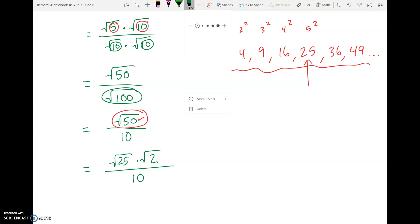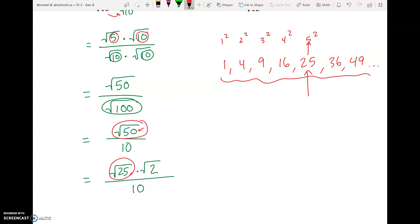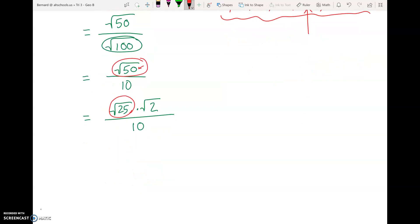But again, the reason why we want to break up 50 like that is because when we break it into 25 times 2, we can actually take the square root of 25 because it's just 5. And so we can rewrite the square root of 25 as 5. The square root of 2 has to stay there. So it becomes 5 root of 2 on top and then a 10 on the bottom.